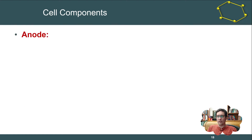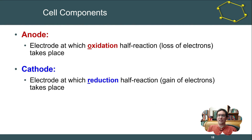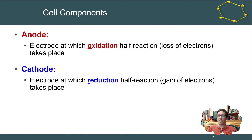All electrochemical cells have an anode and a cathode. The anode is the electrode at which the oxidation half-reaction occurs — it's where electrons are ultimately coming from, losing electrons. The cathode is where electrons are going, so it's where the reduction half-reaction occurs. You can remember this by the mnemonic: AN OX and RED CAT — anode for oxidation, cathode for reduction.